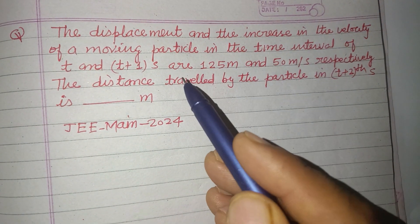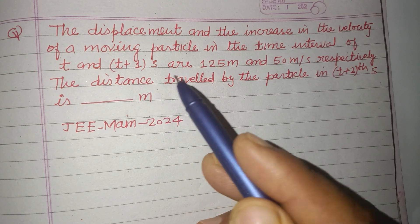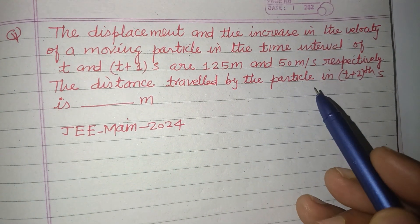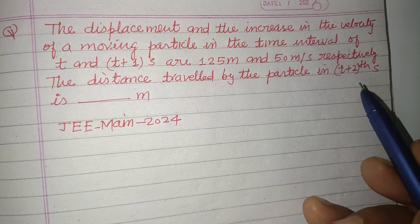The displacement and the increase in the velocity of a moving particle in the time interval of t and t plus 1 second are 125m and 50 m/s respectively. The distance traveled by the particle in t plus 2 second is to be found.